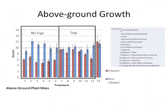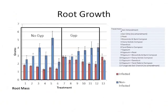For above-ground growth, the blue bars are non-infected plants and the red bars are infected plants. Without gypsum, none of the organic residues really provided any disease suppression — all the red bars showed pretty low growth. With gypsum, there wasn't really an interaction with the organic matter, but the gypsum did help plant growth in infected plants. Looking at non-infected plants, gypsum slightly decreased plant growth, which I attribute to salinity effects. Root growth tells a similar story — some disease suppression from gypsum, but really no effect from any of the composts.